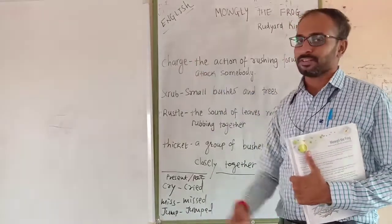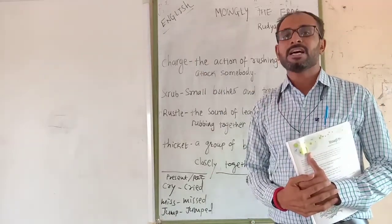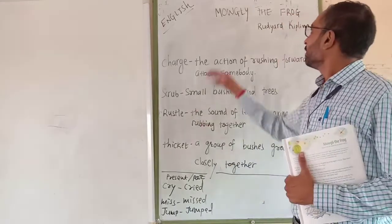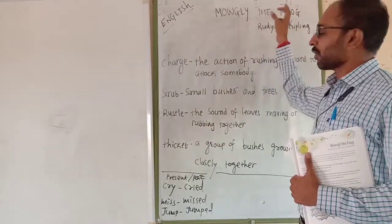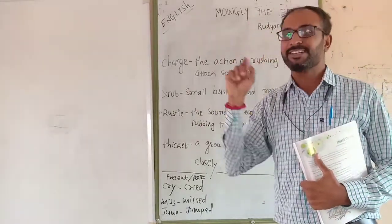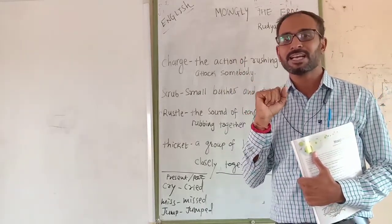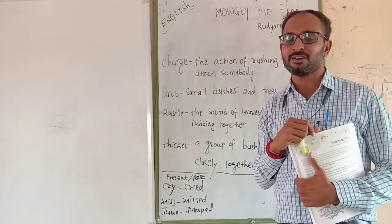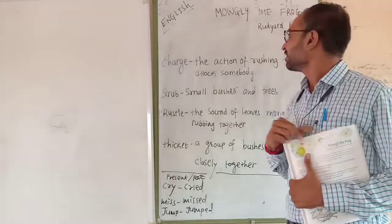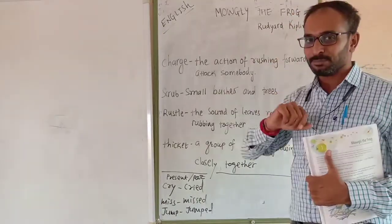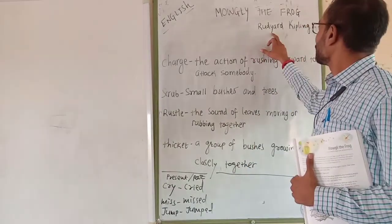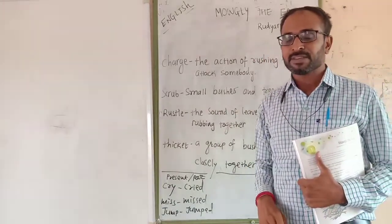Today we are going to learn your subject in English, chapter number 5: Mowgli the Frog. Mowgli is one of the famous and popular characters from the Jungle Book. It is also from Jungle Book and written by Rudyard Kipling.